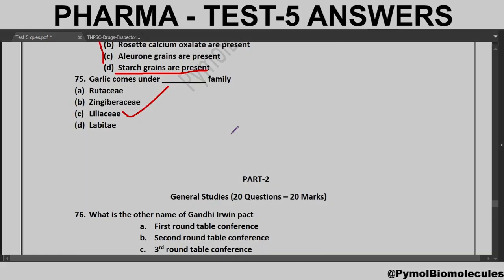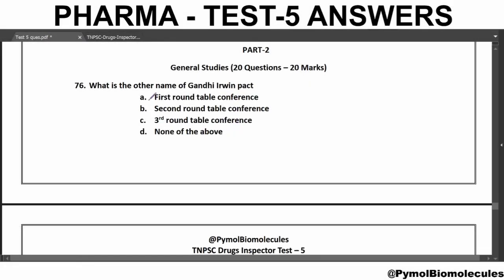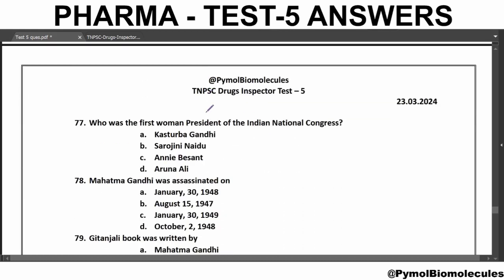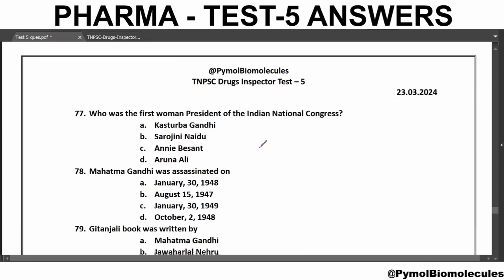That covers the pharmacy paper. Moving on to Part 2: General Studies. What is the other name for the Gandhi-Irwin Pact? It is associated with the Second Round Table Conference. The First Round Table Conference was in 1930, the Second in 1931, and the Third in 1932. Who was the first woman president of the Indian National Congress? Annie Besant. The first woman president from India was Sarojini Naidu. Annie Besant was Irish.